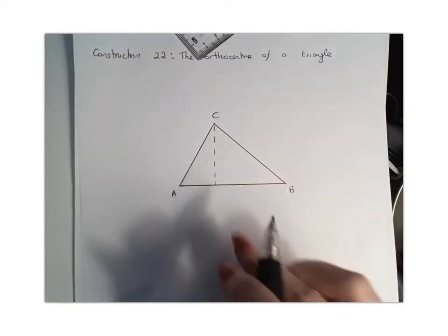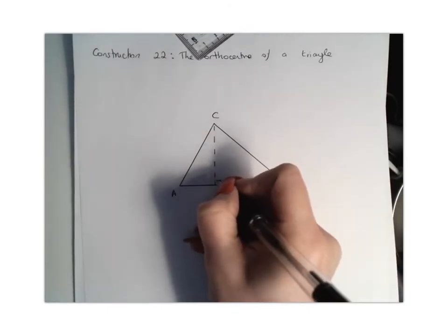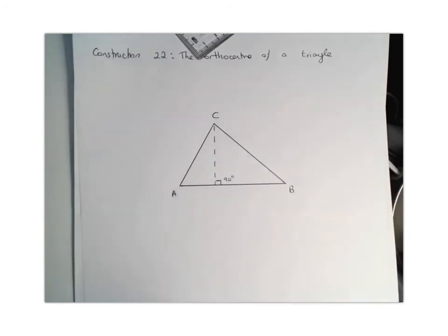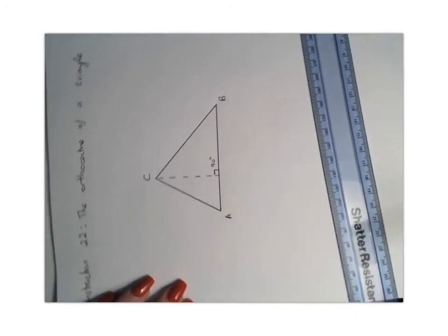So this line here would be our first altitude. That's going to be 90 degrees and we're going to have to do that for another side of my triangle. So if I spin it around like so...